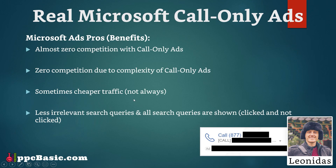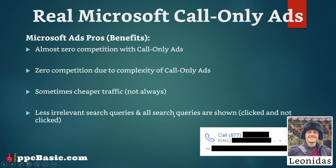Another benefit is that sometimes the traffic is cheaper than on Google Ads because Microsoft doesn't have as much traffic — though this is not always the case, as many people still bid on the same keywords. Nonetheless, there is occasionally cheaper traffic compared to Google Ads. A major benefit is that there are fewer irrelevant search queries. Unlike Google, which shows ads for close match variations even with broad match modifier, Microsoft Ads tries to display your ads on keywords that are as relevant as possible, especially if they understand your niche.